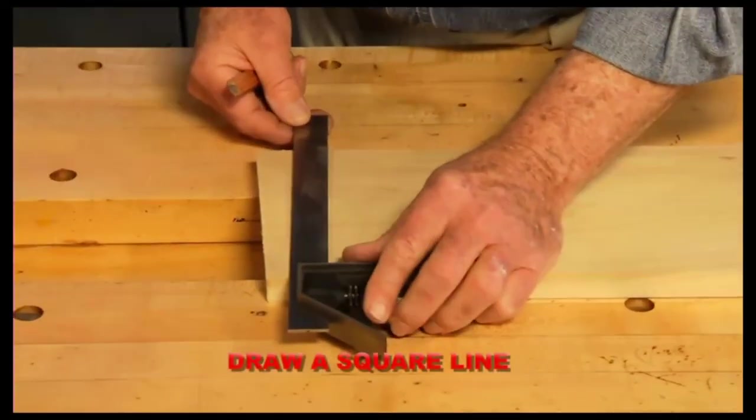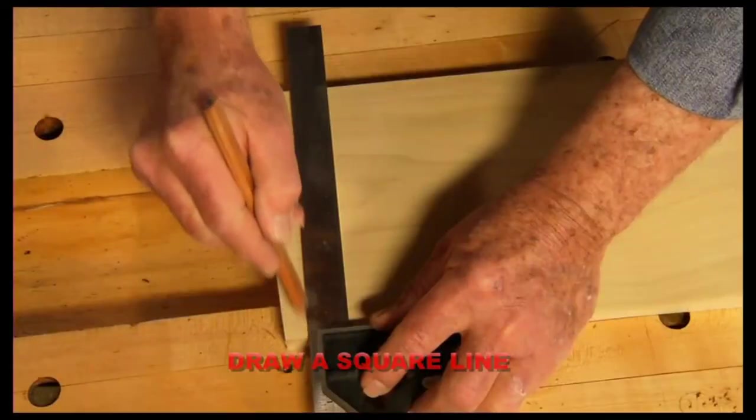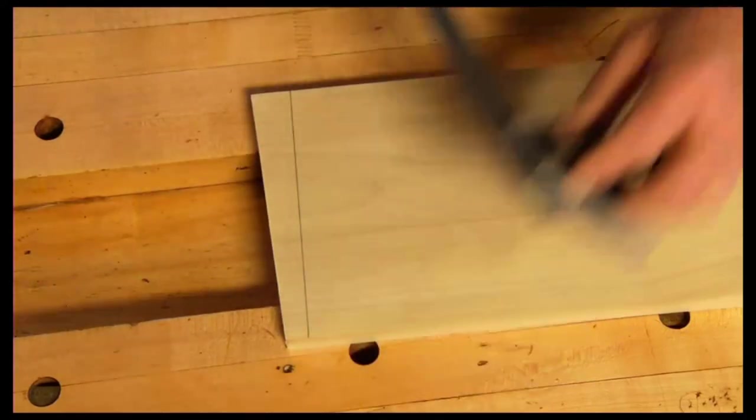Perhaps the most common use of the combination square is to mark a straight line perpendicular to the edge of a board.